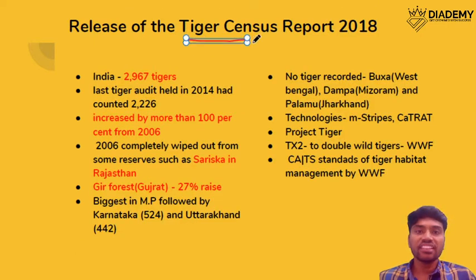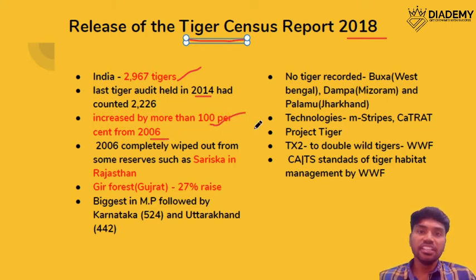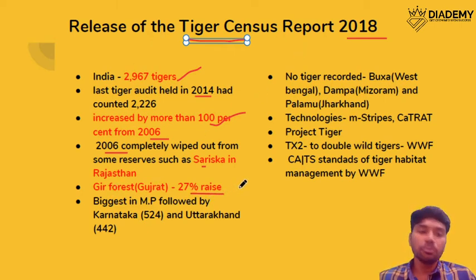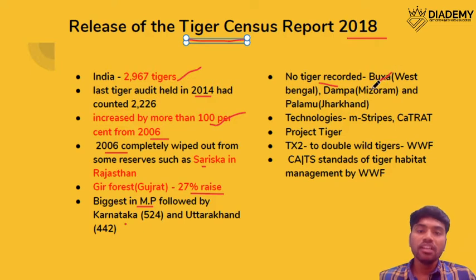The Tiger Census Report 2018 is very important. Presently India has 2,967 tigers, which is more than a 100% increase with respect to 2006. In 2006, tigers were completely wiped out in Sariska, Rajasthan. According to this report, Gir forest had the highest rise of 27%. With respect to states, Madhya Pradesh is in first position, followed by Karnataka and Uttarakhand. The report also says no tigers were recorded in Buxa (West Bengal), Dampa (Mizoram — also known for highest forest cover by land area), and Palamu in Jharkhand.